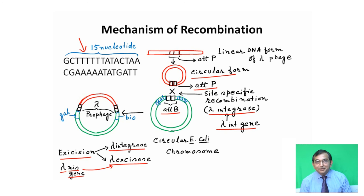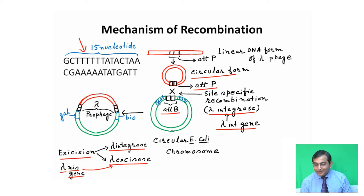With the help of both lambda integrase and lambda excisase, the lambda prophage is excised from the host DNA. Sometimes, abnormal excision occurs, as a result of which the lambda chromosome will carry either galactose genes or biotin genes from the host chromosome and transfer them to another bacterium. This is one of the processes by which gene transfer occurs from one bacterium to another, using lambda phage.